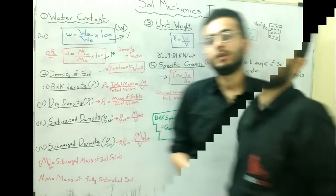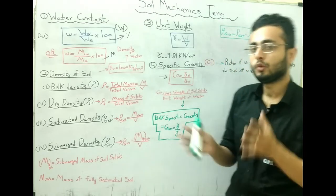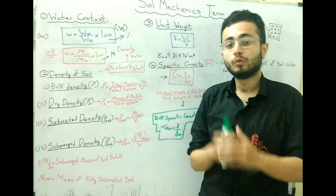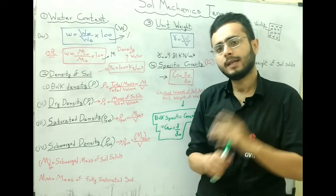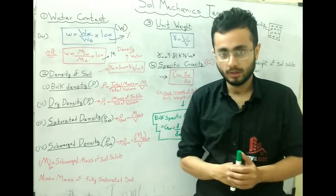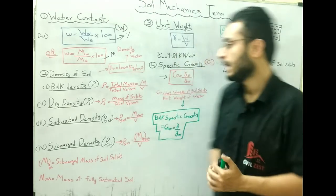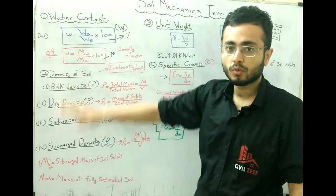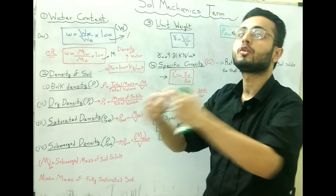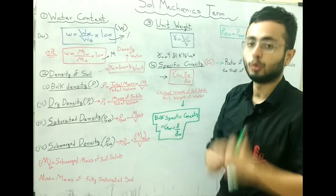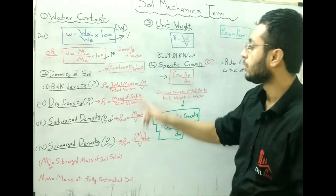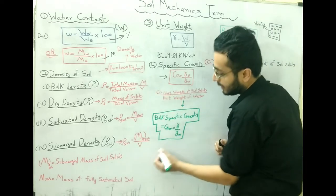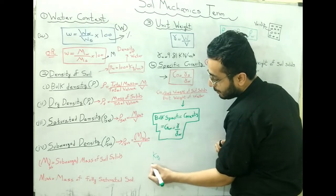Next, density of soil. Density is a basic and important term in science, defined as the ratio of mass to volume. The same concept applies in soil mechanics. Density is the mass-to-volume ratio and its unit is kg per meter cube — kg for mass and meter cube for volume.